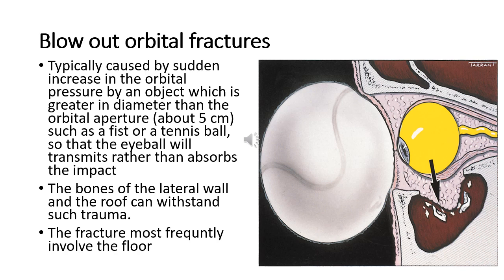Since the bones of the lateral wall and roof can usually withstand such trauma, the fracture most frequently involves the floor of the orbit along the thin bone covering the infraorbital canal. Occasionally the medial wall may also be fractured. A pure blowout fracture does not involve the orbital rim, whereas an impure fracture involves the rim and/or adjacent facial bones. Clinical features vary with the severity of trauma and the time interval between injury and examination.